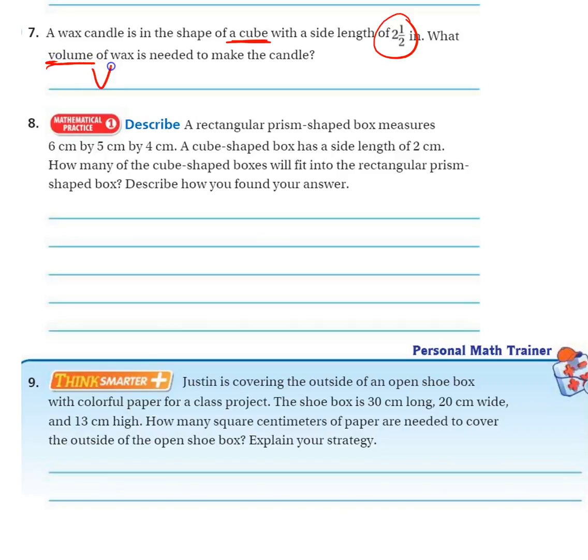So the volume is length times width times height. The length, the width, and the height is all 2½. You can write that as 2.5. I'm going to let you multiply that out.